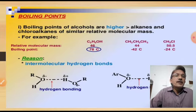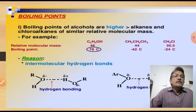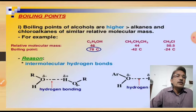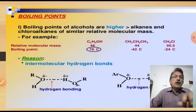For example, the boiling point of ethyl alcohol is 78°C, whereas the boiling point of propane is −42°C and the boiling point of methyl chloride is −24°C. When we compare the boiling point of ethyl alcohol with those of propane and chloromethane, ethyl alcohol's boiling point is far higher due to the presence of intermolecular hydrogen bonds.